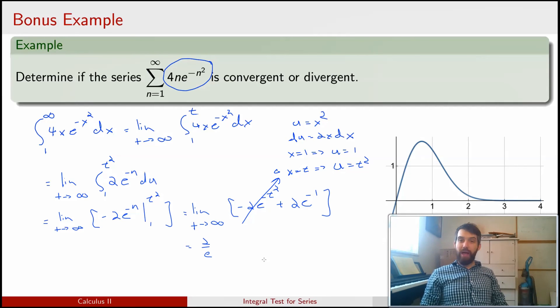So that's my answer for the integral. The integral converges to 2 over e, and therefore, my original series from 1 to infinity of 4n e to the minus n squared converges. And again, note that I'm not saying it converges to 2 over e—it almost certainly doesn't. I'm merely saying that it converges.